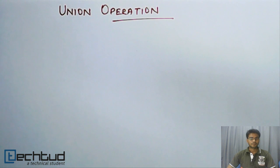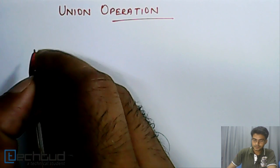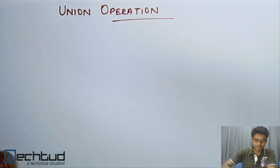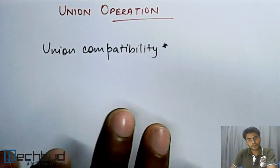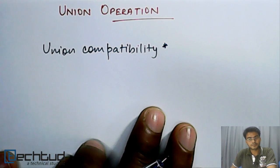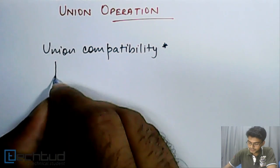But before we apply the set operations on a relation or a set of relations, they have to satisfy certain criteria. These criteria which they have to satisfy is called union compatibility. Two or more relations are union compatible if they satisfy the following conditions.